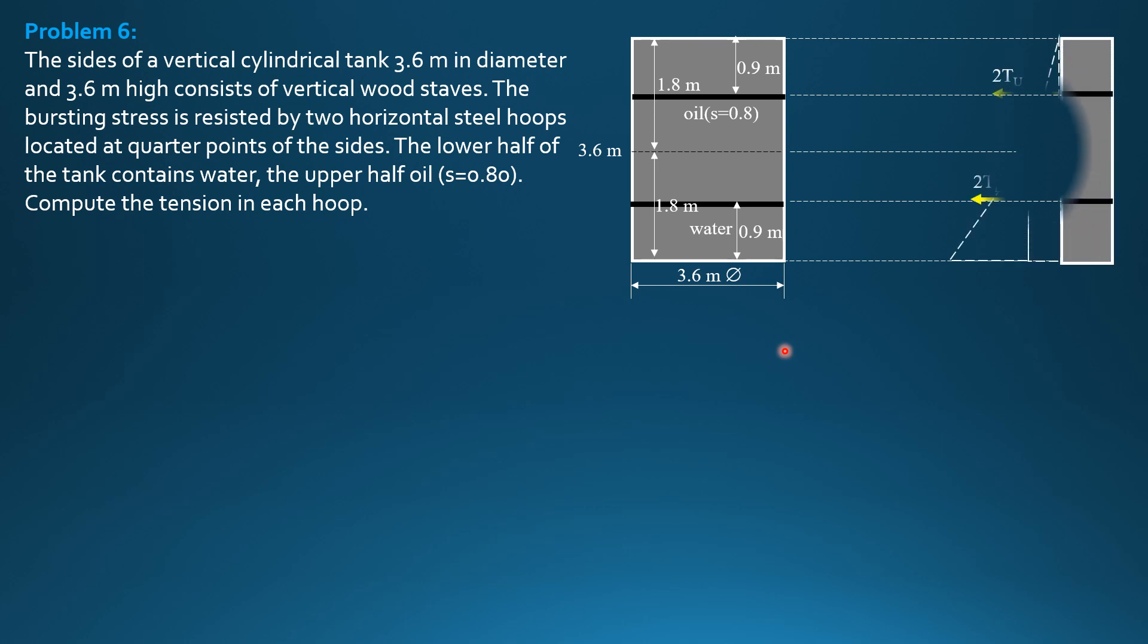Let's have the free body diagram of the side. We have two times tension in the upper hoop here, two times tension in the bottom hoop, in the lower hoop or bottom hoop. Then, this is the pressure diagram. Let's call this intensity of pressure P1. That's 0.9, that's 0.9, so this is 1.8. P1 and this one as P2. Then those are the distances.